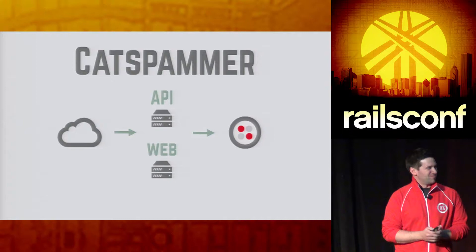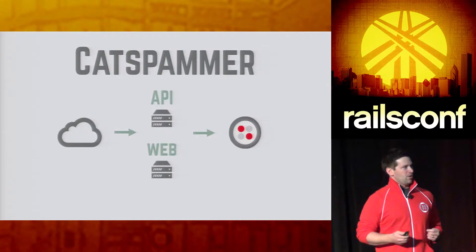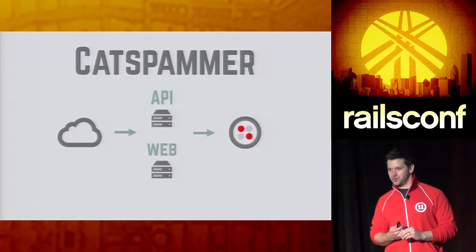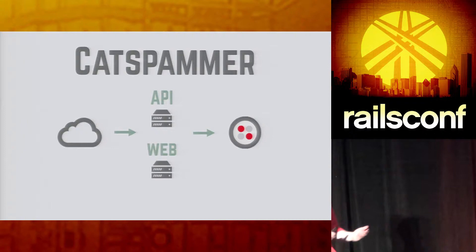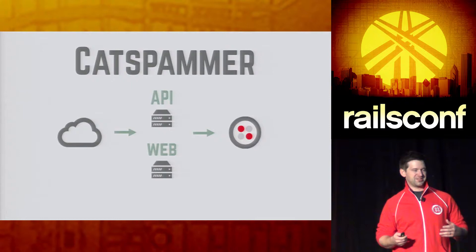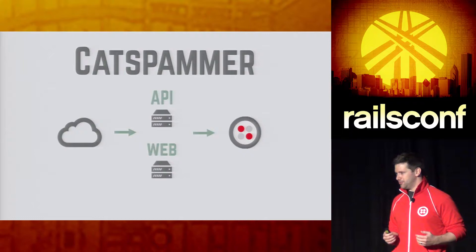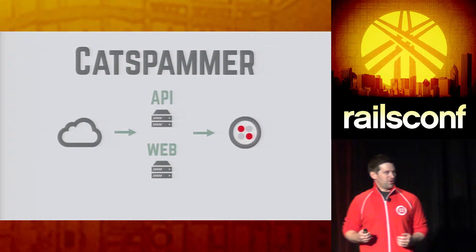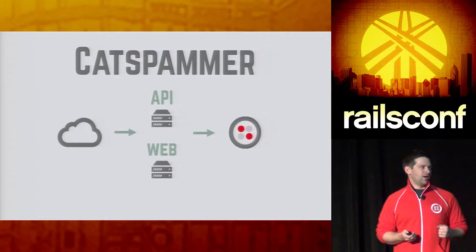That's what our service is going to provide. Starting off with a very basic architecture, we're going to provide both an API and a web interface to our service, and then send things out through Twilio. We'll allow our customers to retrieve cats and send them out to their friends using Twilio. This is actually CatSpammer — CatSpammer.com actually exists if you guys want to play with it. This is pretty simple. You might think you don't need to add distributed tracing into this — it's a very simple architecture.